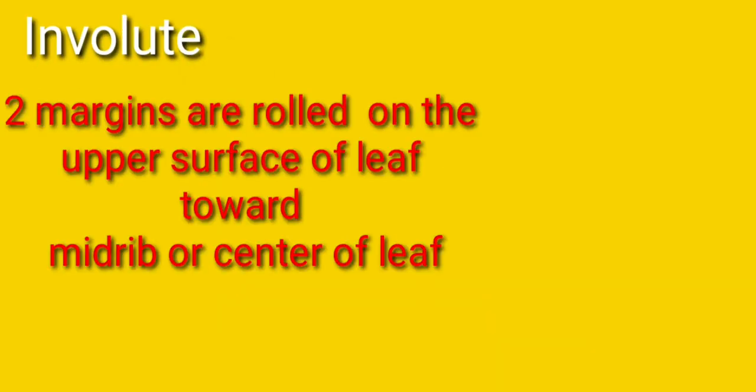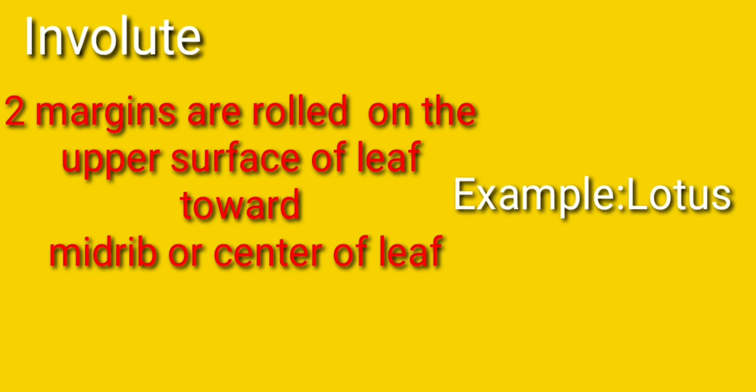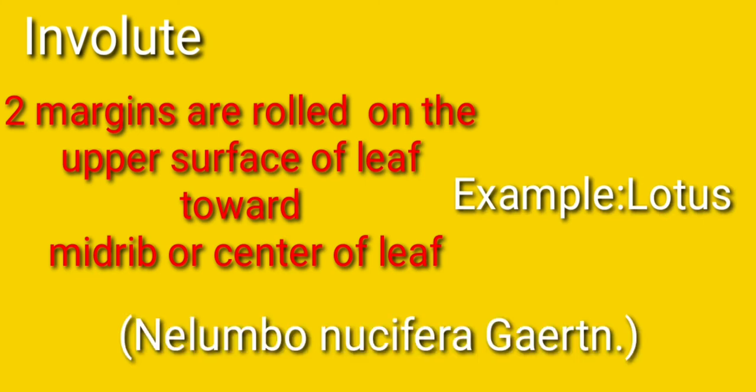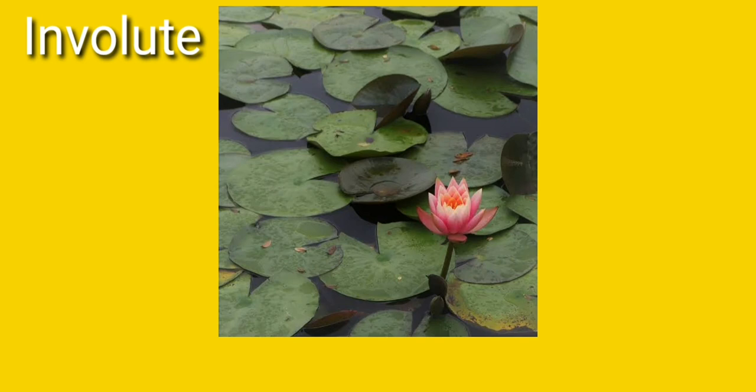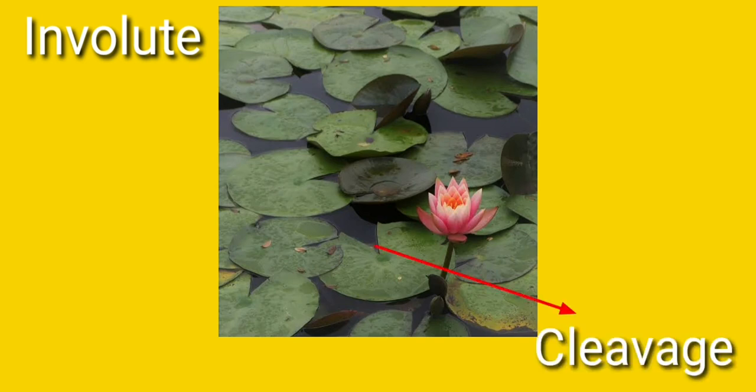The next type is involute. Here two margins are rolled on the upper surface of the leaf towards the midrib or center of the leaf. Example: lotus, binomial name Nelumbo nucifera. This is the lotus leaf. Here you can find the cleavage at the point where the petiole meets the lamina portion, and it makes the two margins bend towards the upper surface.